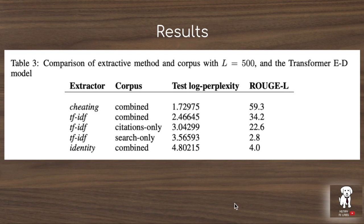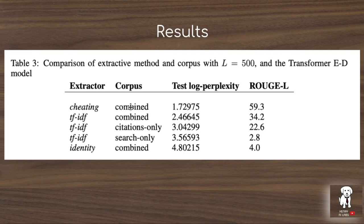These ablation results show the effect of different extraction methods and different input corpus choices. The combined corpus — using both Wikipedia reference articles and Google search results — has the best performance by far compared to citations-only or search-only. With respect to extraction, the cheating method, which uses bigram overlap between the raw combined dataset and the target Wikipedia opening section, achieves the best result by a significant margin. This implies there is room to improve the extractive method with a better algorithm than TF-IDF.